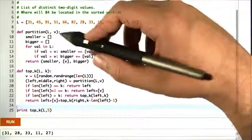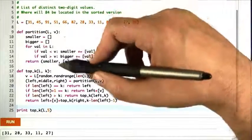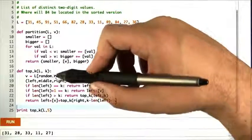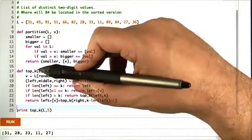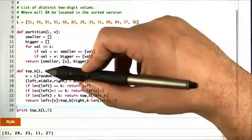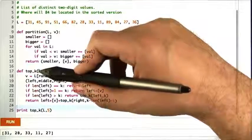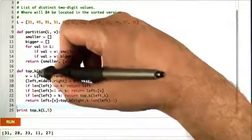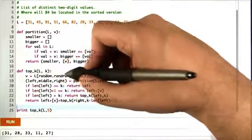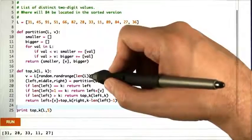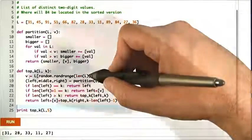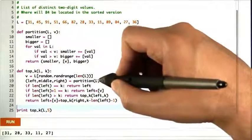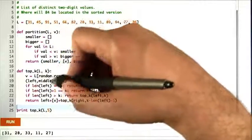Given this modification to partition, we can run top k as follows. We're given a list and some number k, and we want the smallest k elements of L. We start by choosing a random element of L - just something random in the range of the length of L - and call that v. Then we partition L on v and separate it into the left, middle, and right.